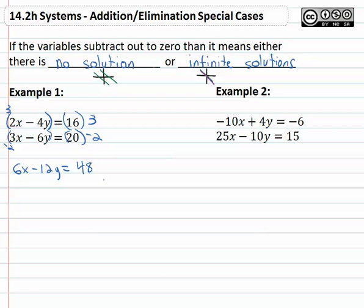The second equation, multiplying by negative 2 times 3x gives us negative 6x. Negative 2 times negative 6 is positive 12y equals 20 times negative 2 is negative 40.